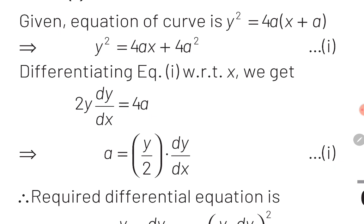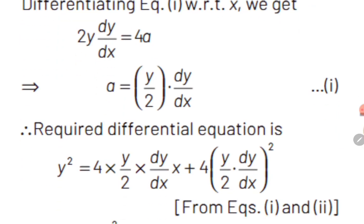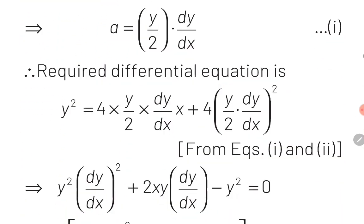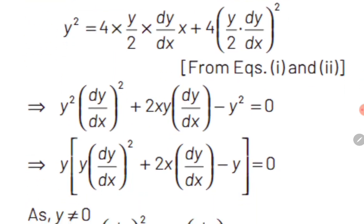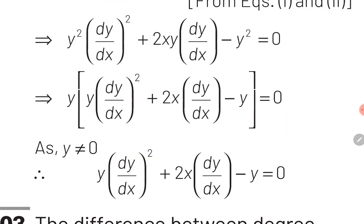Now we have the value of a. We are going to back substitute this value of a into the first equation y² = 4ax + 4a². On substitution, we obtain the equation as y² = 4·(y/2)·(dy/dx)·x + 4·(y/2·(dy/dx))². On solving this and taking y as common, we obtain the final answer: y·(dy/dx)² + 2x·(dy/dx) - y = 0. With this, we have completed this question.